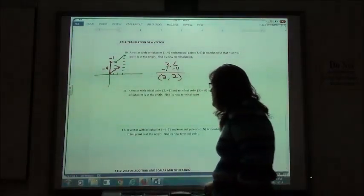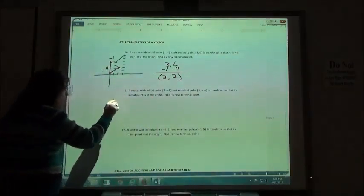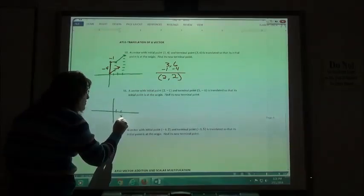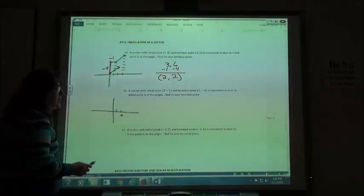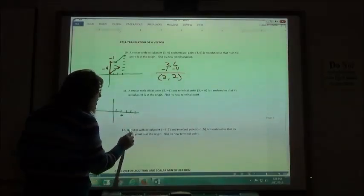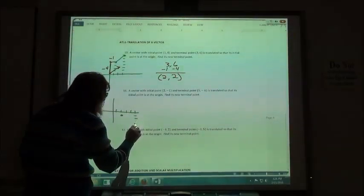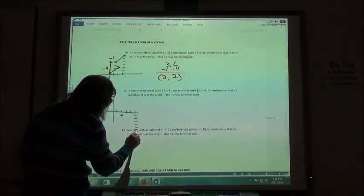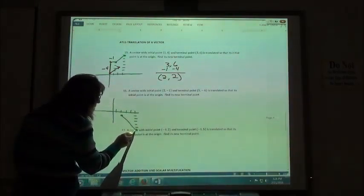Number 11, same kind of thing. My vector has initial point at 2, negative 1. So 2 over, down 1 is my initial point. My terminal point is 5, 1, 2, 3, 4, 5, negative 6. 1, 2, 1, 2, 3, 4, 5, 6, somewhere down there. So my vector is going like this.